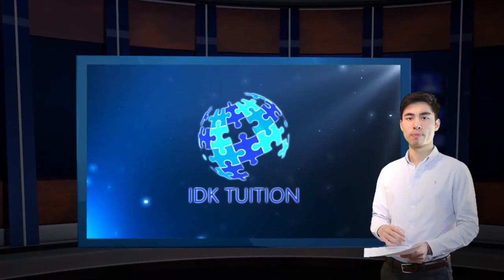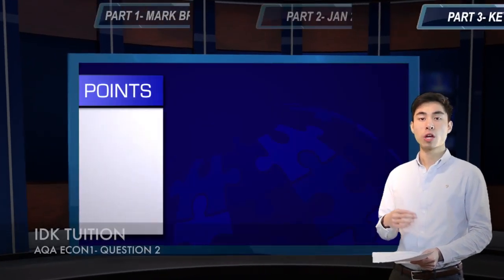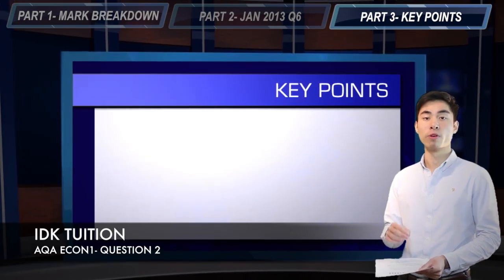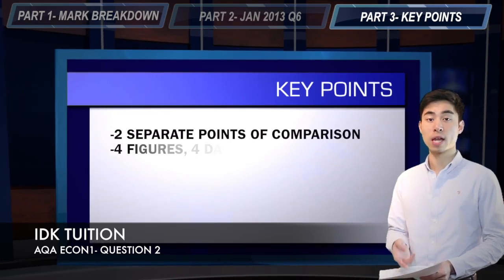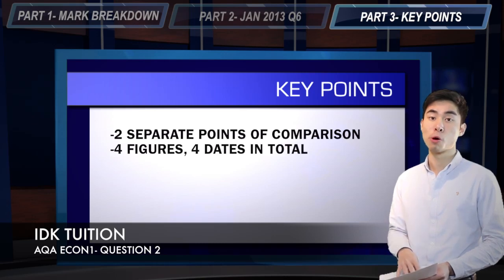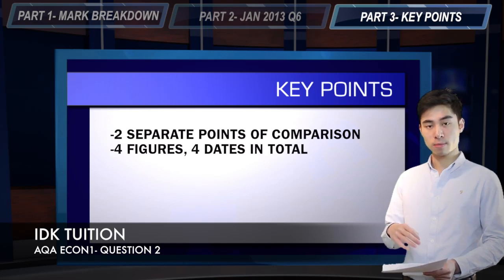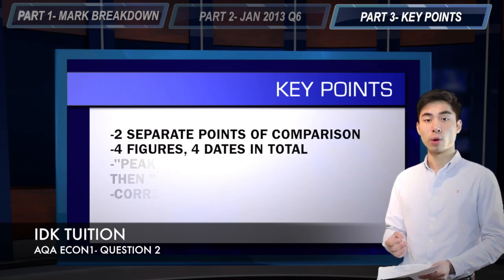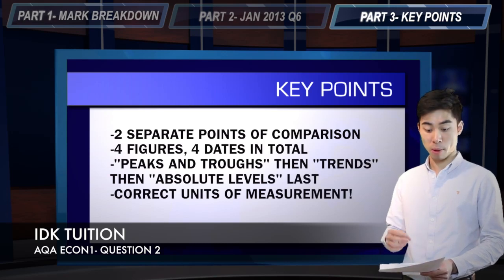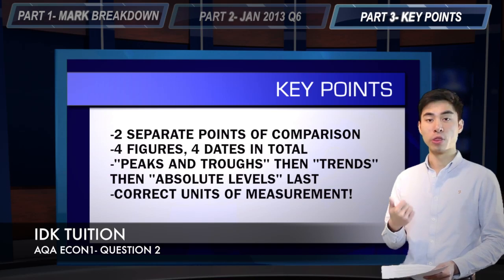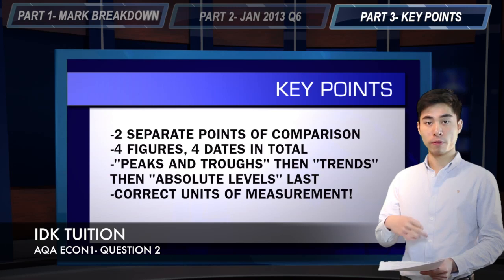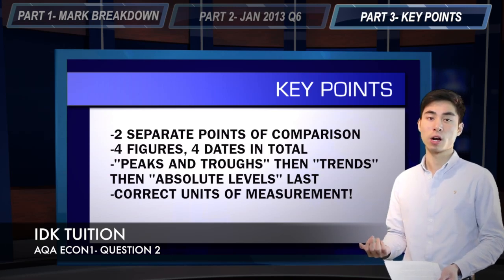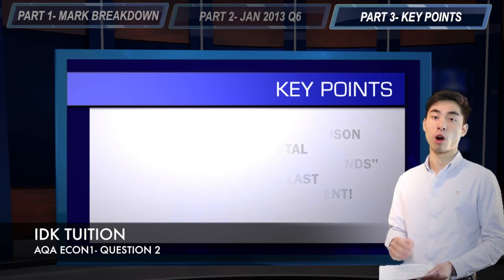To recap the important points: you need two separate points of comparison, and within each point of comparison you need two data points and two supporting dates — so four data points and four supporting dates in total. In terms of order of priority: go for peaks and troughs first as that's the easiest, then trends, and then failing that, if you're really struggling, go for absolute levels last of all. And remember — make sure your units of measurement are correct, as you can't get full marks without including the right unit of measurement.